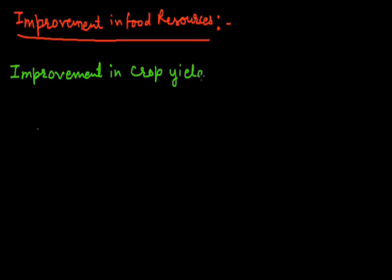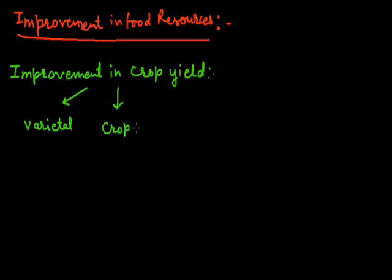Crop production is called the crop yield. How we can increase it? We have three basic criteria through which we can improve crop production. The first criteria is varietal improvement — it means we improve the variety of crops. The second is crop production management.